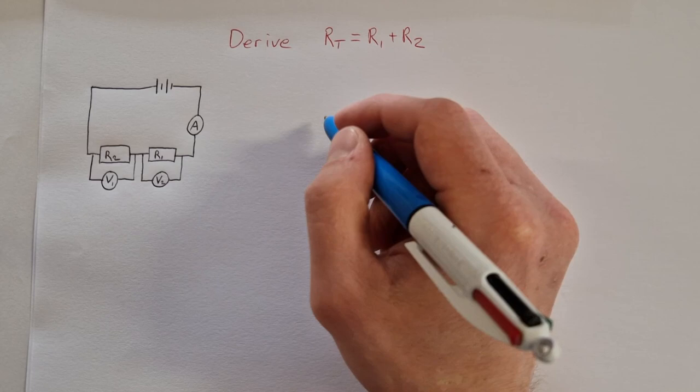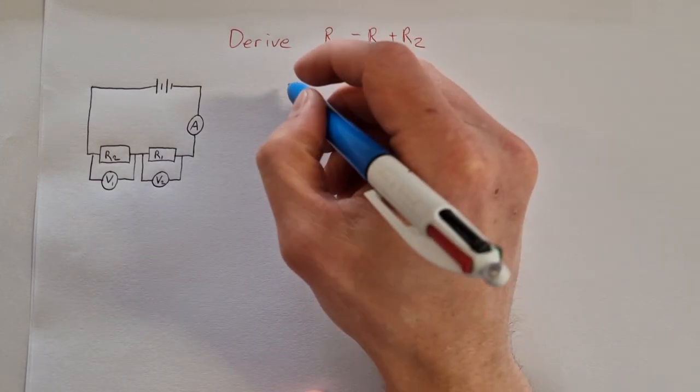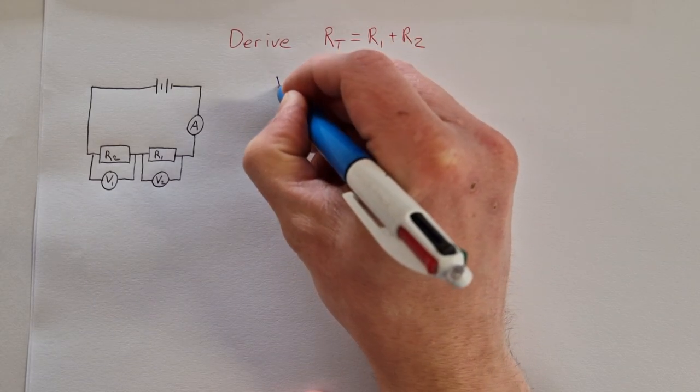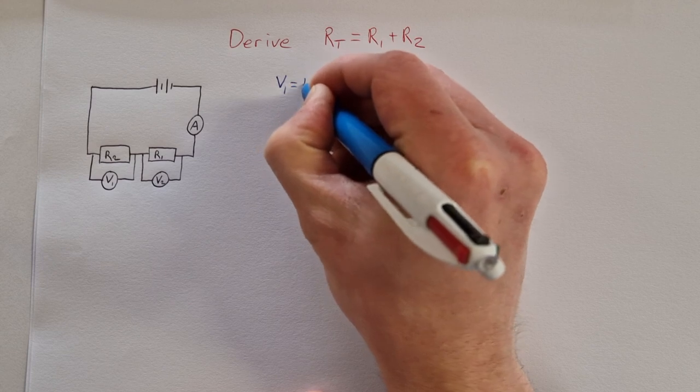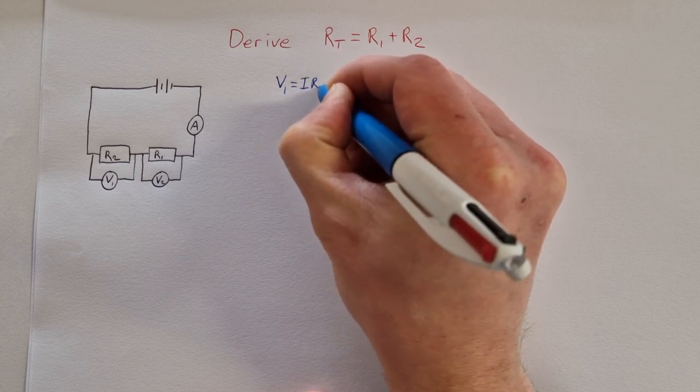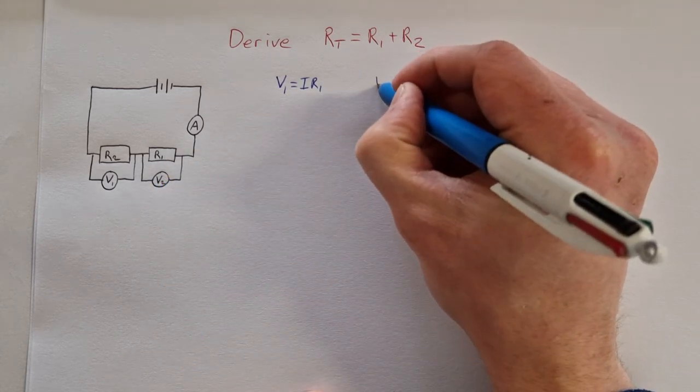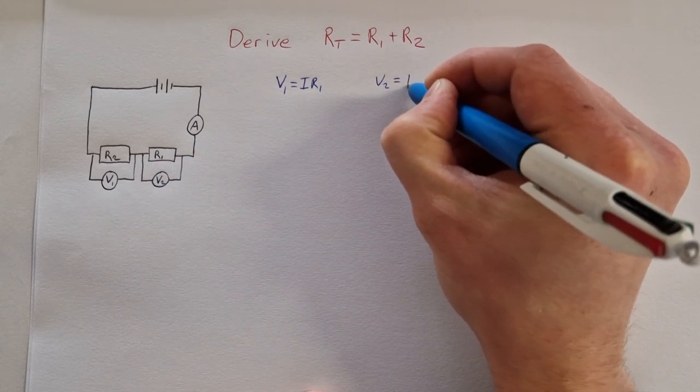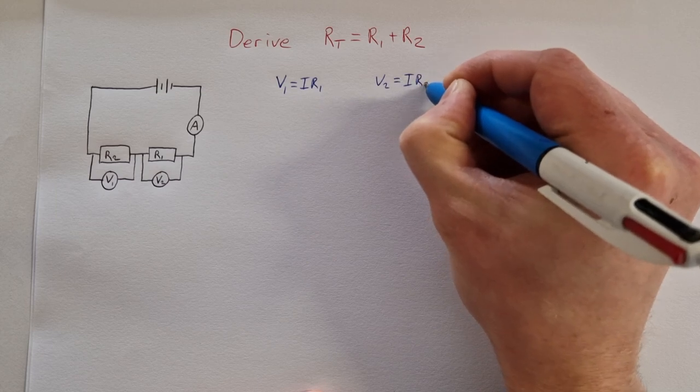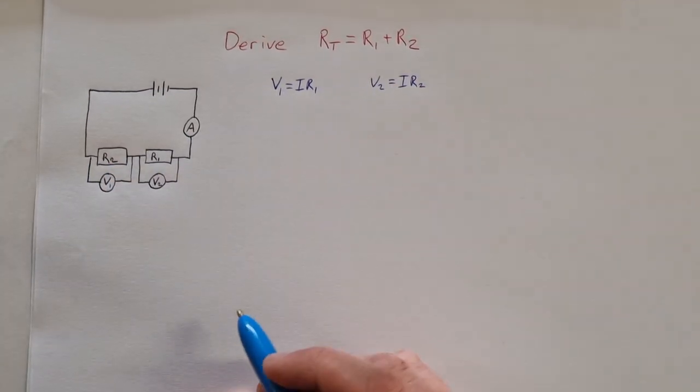We'll start by using Ohm's law. For resistor 1, V1 = I × R1, and for resistor 2, V2 = I × R2.